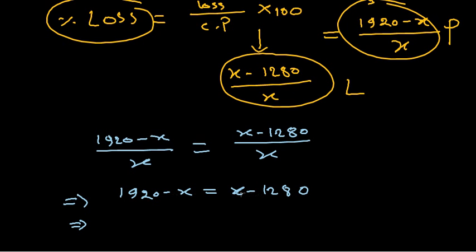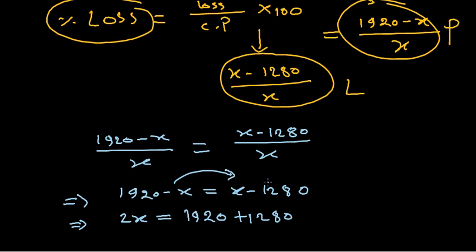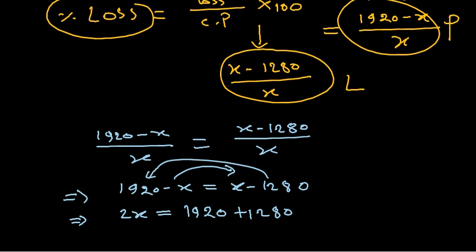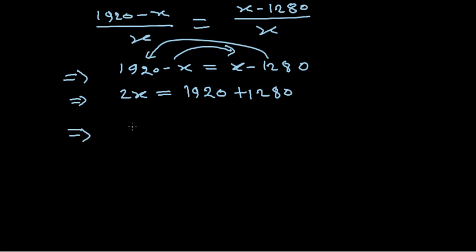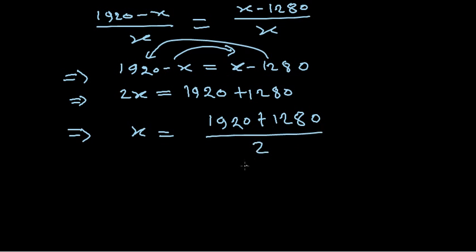Bringing X to the same side: 2X equals 1920 plus 1280, because the X terms are transferred across. So X equals (1920 plus 1280) divided by 2.